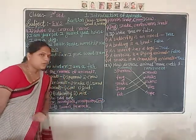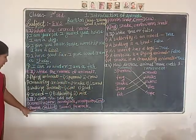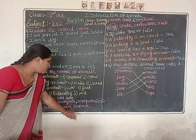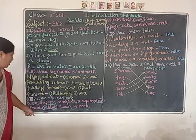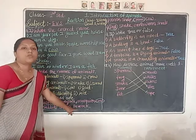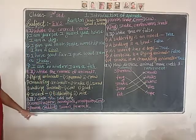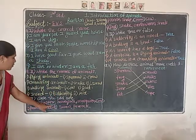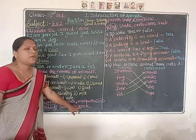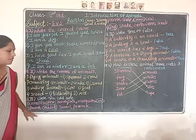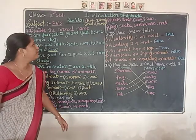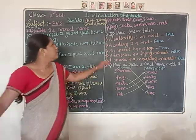Next odd one: parrot, rabbit, swan, and peacock. Which one is odd? We have to circle rabbit. Why? Because parrot, swan, and peacock are all birds, and rabbit is an animal.